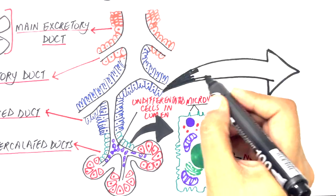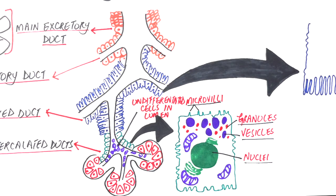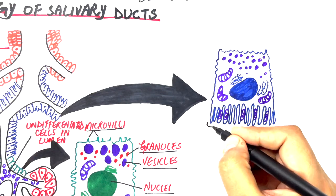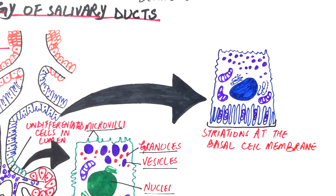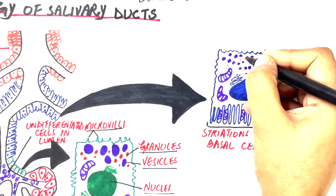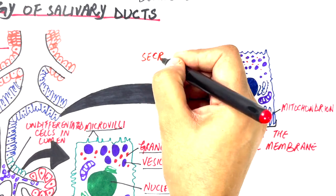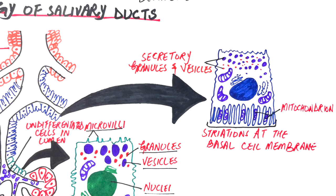The cells making the striated ducts on a closer view are columnar with centrally placed nuclei and acidophilic cytoplasm. Some faint striations or radially oriented lines may be observed in the basal cytoplasm of the ducts and this is how they get their name, the striated duct. These striations result from the numerous elongated mitochondria located in narrow cytoplasmic partitions. The apical or luminal part of the cells contain small secretory granules and vesicles. The secretory granules help in secretion of electrolytes while the vesicles result from the reabsorption of some components of the primary saliva back into the striated duct.